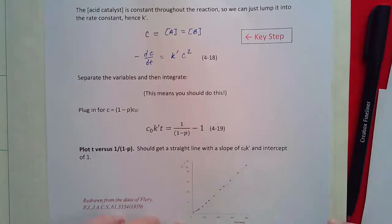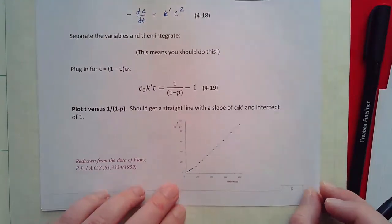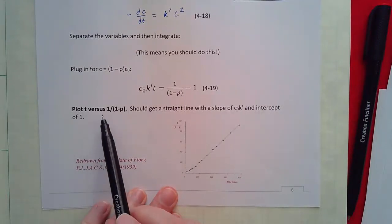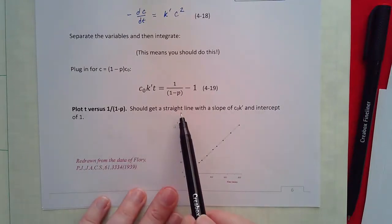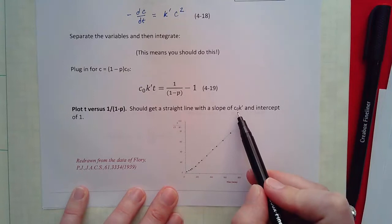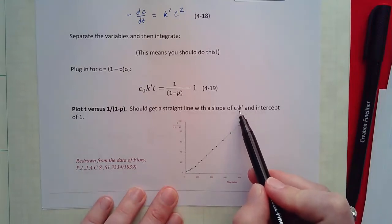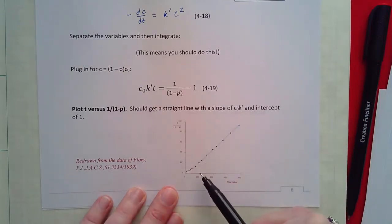So if we now plot time versus 1 over 1 minus p we should get a straight line with a slope of c naught k and an intercept of 1.